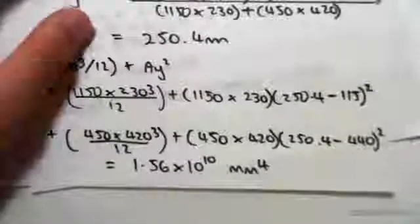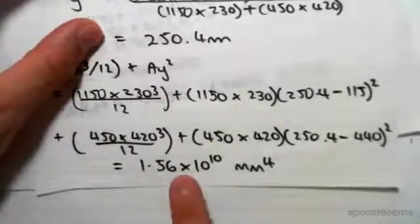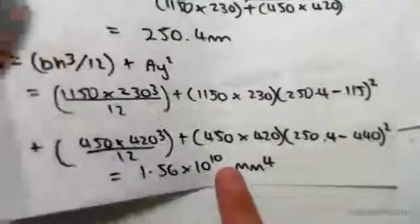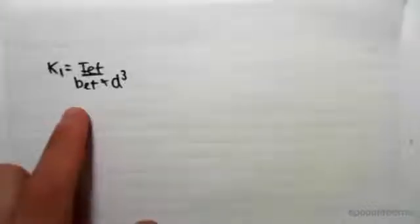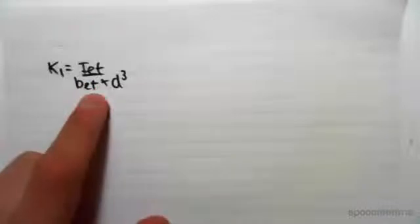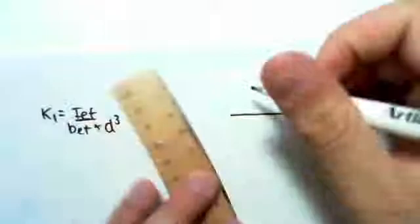Hey guys, I'm just continuing straight on from the previous video. So we found the I value to be 1.56 times 10 to the power of 10. Now we want to get back to k1. If we know BF, we just need to know what D is.